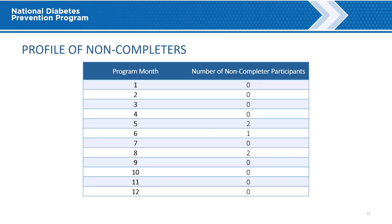This table shows the program month in which the non-completers attended their last session. In this example, two participants attended their last session in month 5, one participant in month 6, and two participants in month 8 of the program.